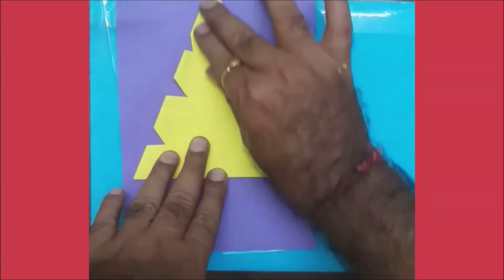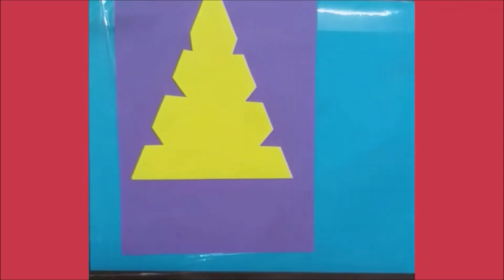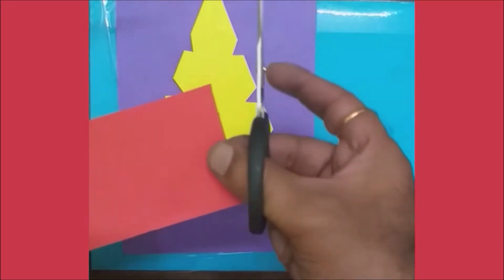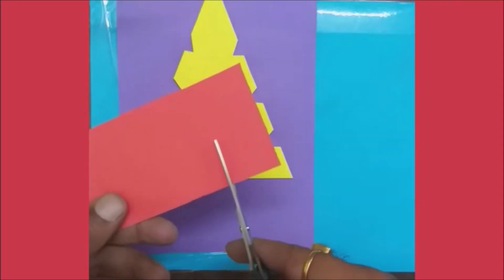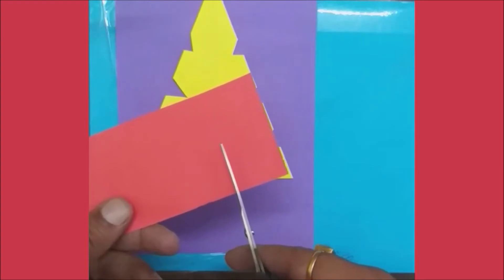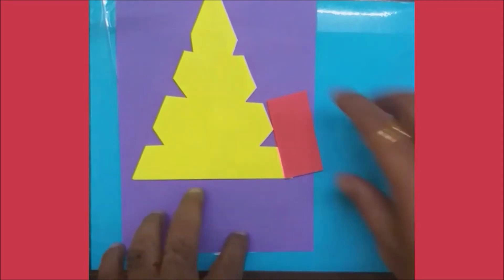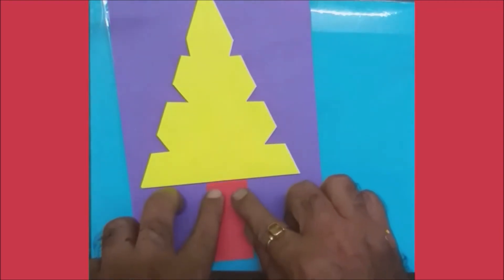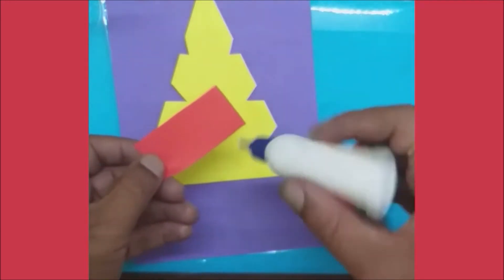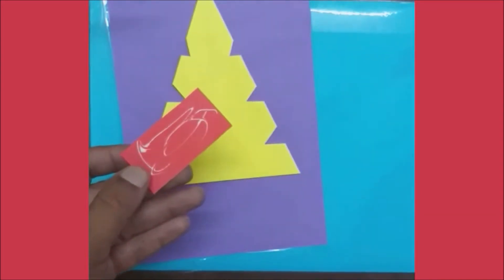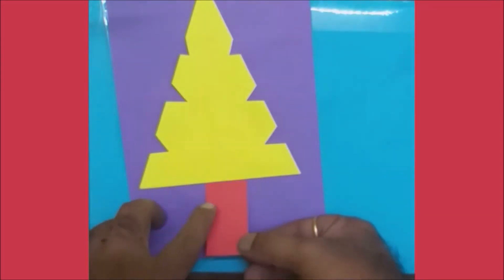Stick it on the paper. You can take any colorful page or a scrapbook. Here I've stuck it. Now I'm going to take a red strip for showing the log at the bottom. Apply glue on it and stick it on the center.